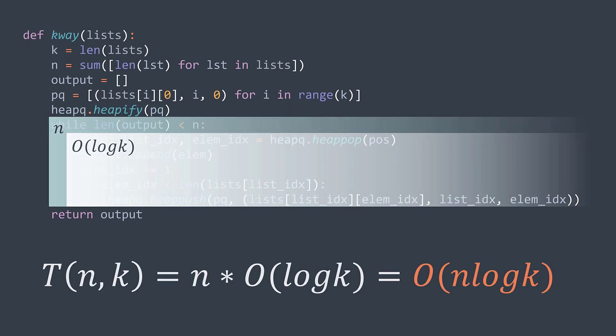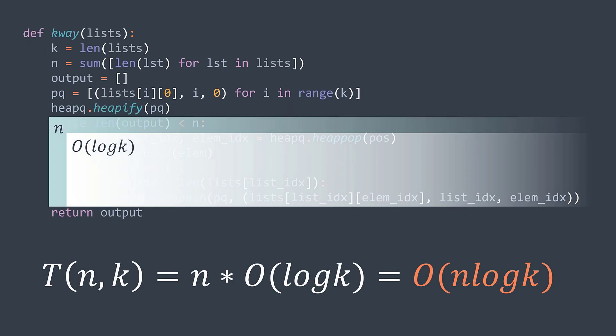For the time complexity, we have n iterations for the loop. But this time, each iteration costs only O(log k) because our queue has at most k elements — one for each list. So inserting and extracting the minimum costs O(log k). We get a time complexity of O(n log k).